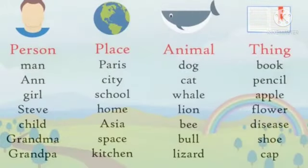We have four categories of nouns: person, place, animal, thing. Under person: man, aunt, girl, Steve, child, grandma, grandpa — all these are the names of persons.